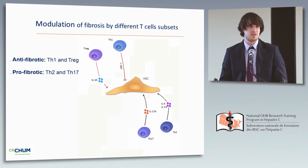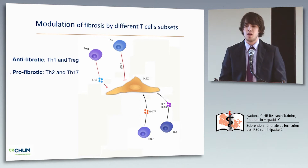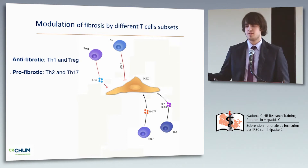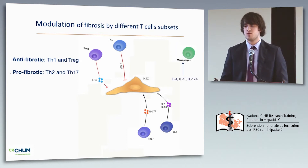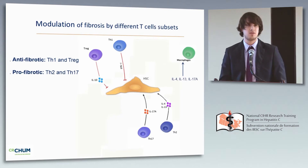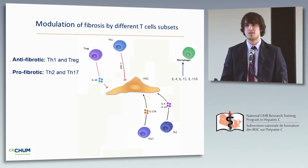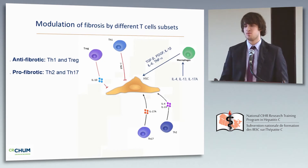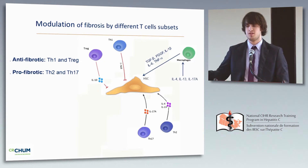Finally, TH17 cells, which produce IL-17 and are pro-inflammatory, have been linked to liver fibrosis progression. Whether or not they can directly activate hepatic stellate cells remains poorly understood, but what is known is that IL-17, along with TH2 cytokines, can activate macrophages and monocytes to produce more pro-inflammatory and pro-fibrotic cytokines including TGF-beta.